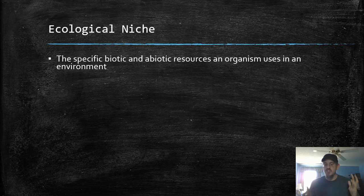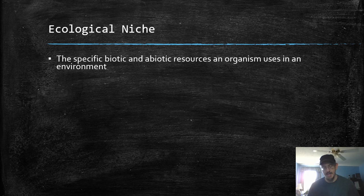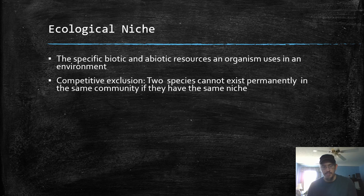A community is an interaction of several populations — different species interacting in an environment and the abiotic factors in that environment as well, so climate and things like that. The specific biotic resources an organism uses in an environment is what a niche is. An ecological niche — think of it almost like the job of an organism in the habitat. Is it the top predator? Is it an herbivore? What does it eat? The specific resources it uses in a habitat, kind of like saying its job. That's a niche.